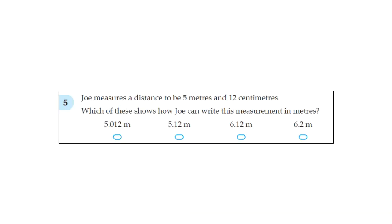Question 5. Joe measures a distance to be 5 meters and 12 centimeters. Which of these shows how Joe can write this measurement in meters? So first of all, we know straight away that we're going to start with 5. So this is wrong and this is wrong because they start with 6.